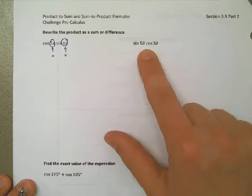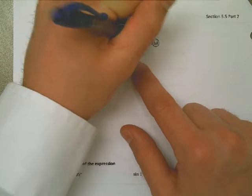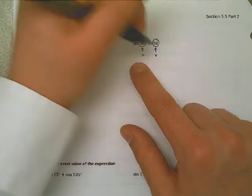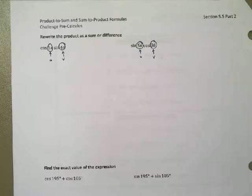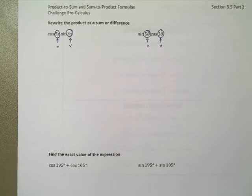On the second example we're going to do, it looks like U is going to be 5 theta, and 3 theta is going to be V. So really, I need to identify this first. I don't know what theta is, I don't know what X is, but now I can go and I can use the formulas to do the following.